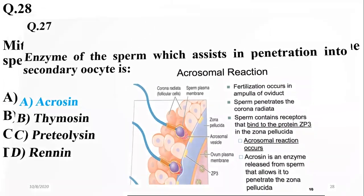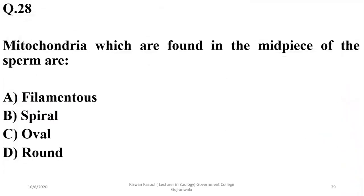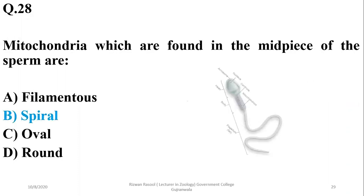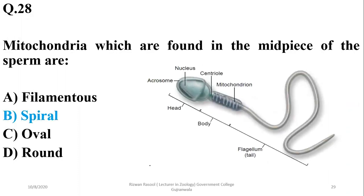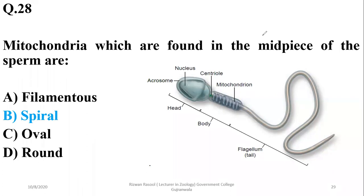Number twenty-eight: the mitochondria found in the mid-piece of the sperm are actually of a spiral shape. As you can observe in this diagram, the mitochondria present there are forming spiral shapes or spiral structures.